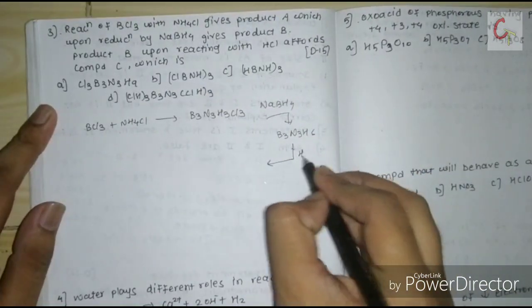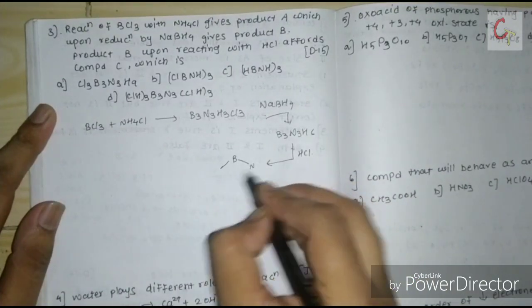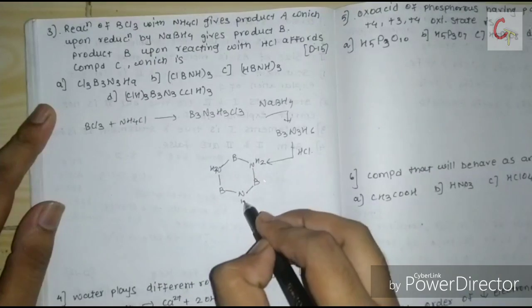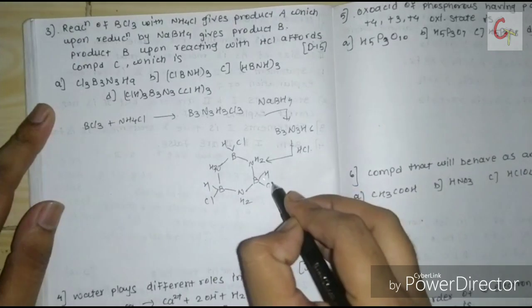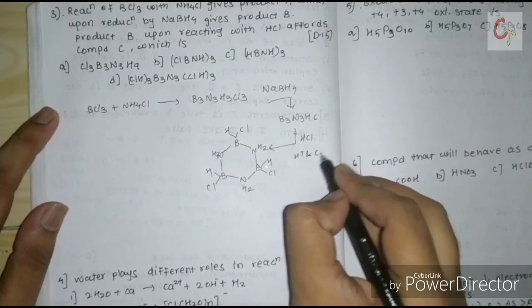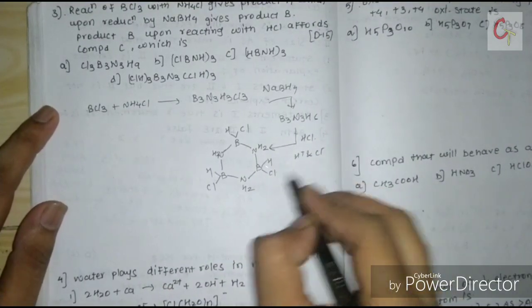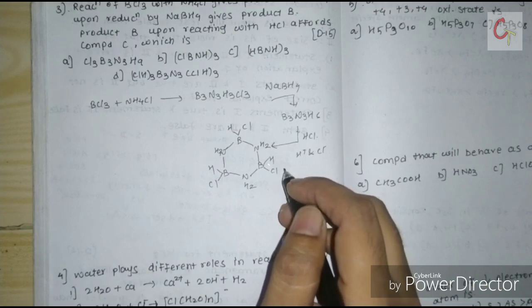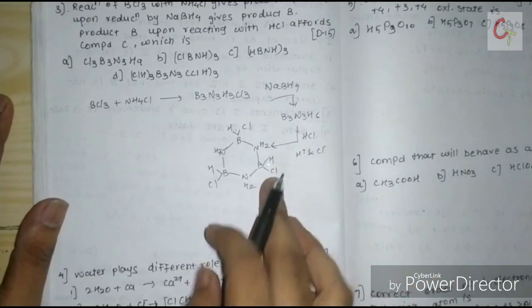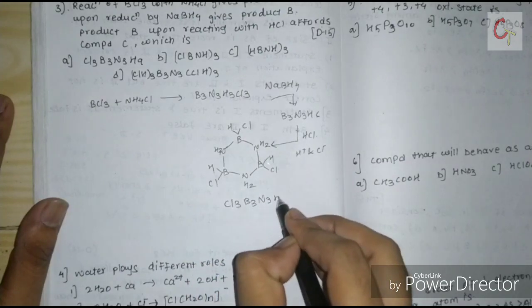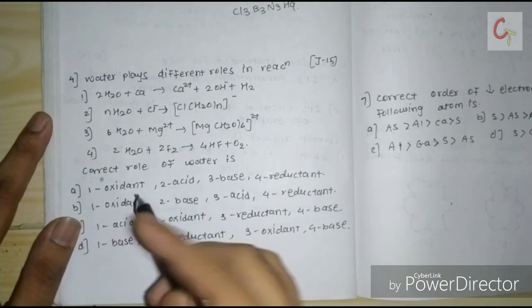In the next step, borazine reacts with HCl. A chlorination step occurs where HCl adds across the B–N bonds — H⁺ attacks boron (electron-deficient) and Cl⁻ attacks nitrogen (electrophile attack). The product will have three chlorines added across the ring. The correct molecular formula is B3N3H9Cl3 (or the equivalent structure with three B–H and three N–H bonds plus three Cl). The correct option is A.